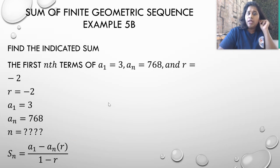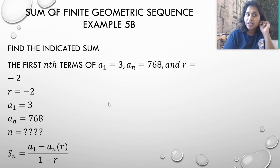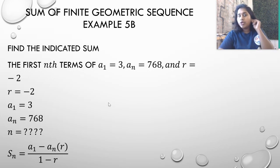Alright, that was example 5a. We've already solved 295.71. Let's move on to example 5b. For the indicated sum, find the nth term of a sub 1 is equal to 3 and a sub n is equal to 768. What would r be? So, sorry, r is equal to negative 2. I think I forgot my animations on the slide. I was wondering why I had so much information up.